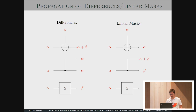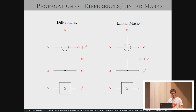First, a short reminder about how differences in linear masks are propagated in a cipher. Over an XOR, the differences A and B just sum up. An interesting part for tweakable block ciphers is when the differences are the same, because then they cancel out. Over a branching point, they are the same, and over an S-box, we can compute the differential distribution table and then it holds with a certain probability.